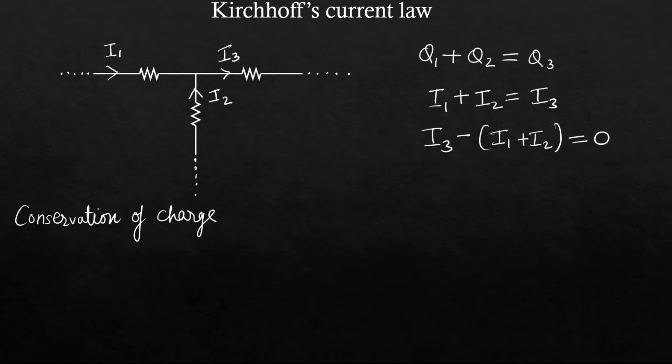That is, I am taking the entering current with a negative sign and the leaving current with a positive sign. Usually in KCL we take leaving current as positive and the entering current as negative. So it just says sigma I leaving plus sigma I entering should be zero.